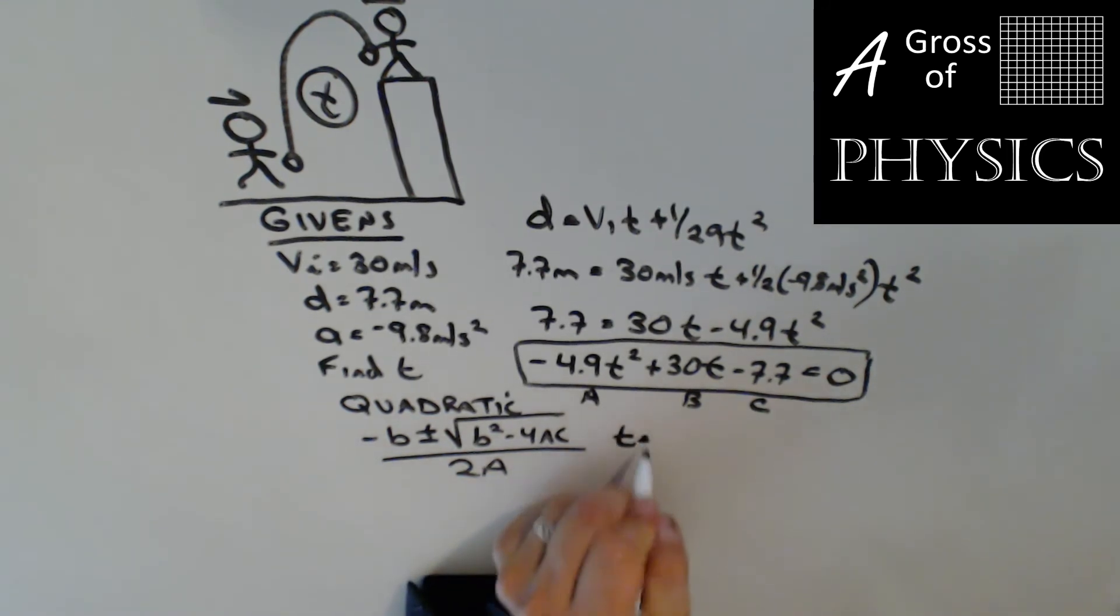I'm going to stick with an online equation solver, and when I do that, I have two values. t can either be 0.268 or t could be 5.854.